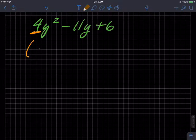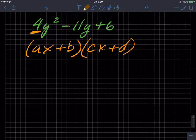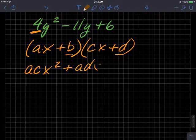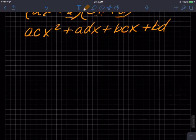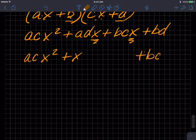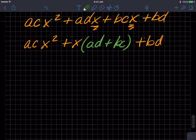Let's go to letters: ax plus b and cx plus d. I tried to keep the b and the d the same. So now ax times cx, I get acx squared. ax times d, I get plus adx. b times cx, I get plus bcx. And b times d is still bd. I'm going to factor this x again: acx squared plus x times (ad plus bc) plus bd.